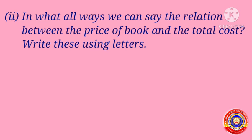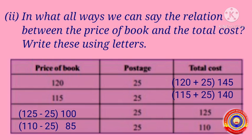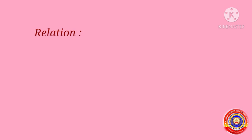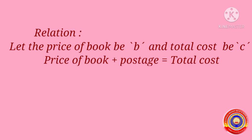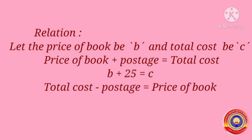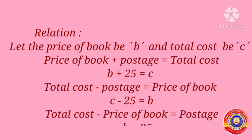In what ways can we state the relation between the price of book and the total cost? Write this using letters. Look at this table. The postage remains the same, meaning its value is constant. We use variables or letters for items where the values are changing. Let the price of the book be B and the total cost be C. Then price of book plus postage is equal to total cost, so we can write the relation as B plus 25 is equal to C.